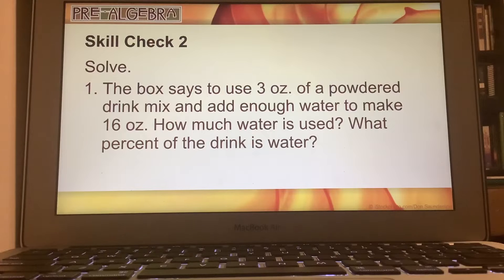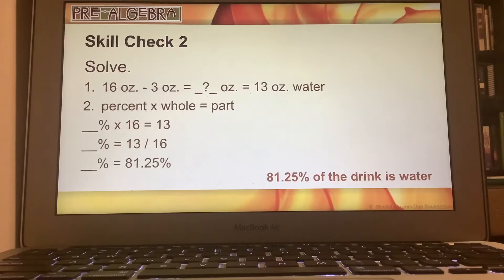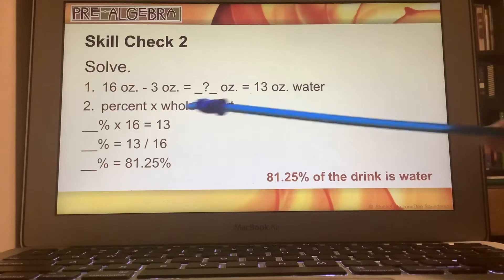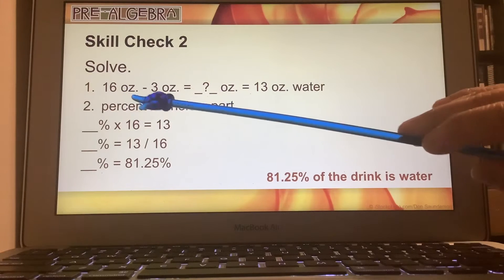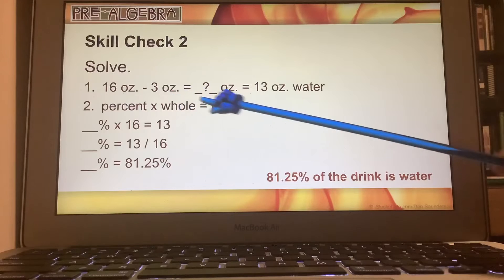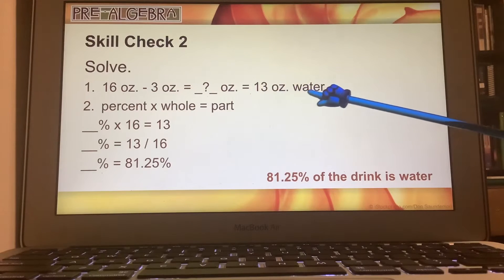So you're going to take three ounces of a powdered drink mix, and you're going to subtract that from 16 ounces, so that you can get the amount of water that is used. So we're going to have 16 ounces minus 3. That gives us 13 ounces of water.